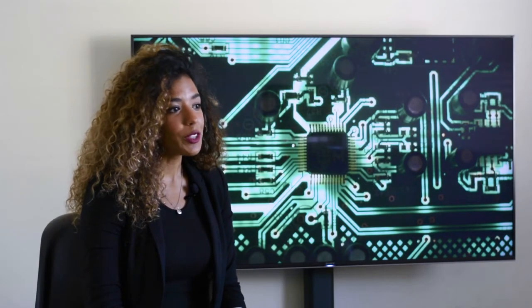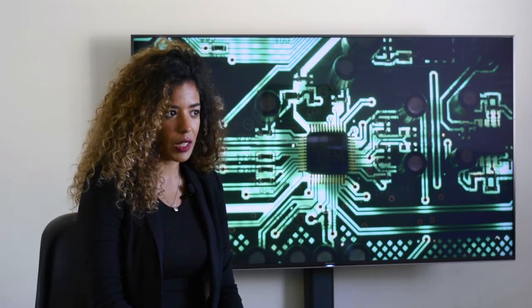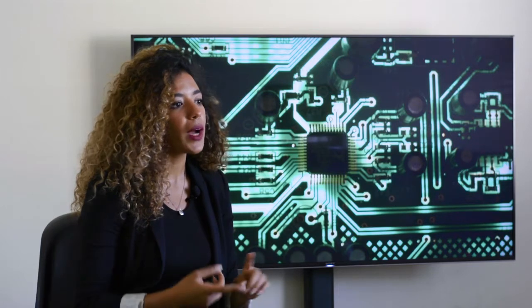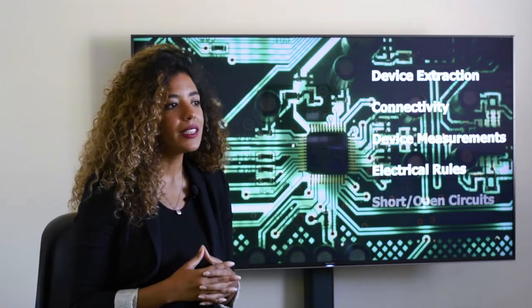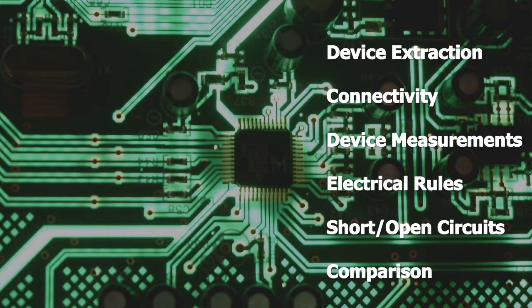LVS, or layout versus schematic, is an essential part of the circuit verification flow. The operations performed include extracting devices from the layout, determining device and net connectivity, performing checks like electrical pass check, floating node checking, short and open net detection, device measurements, and finally comparing layout to the schematic to ensure that the logical circuit representation matches the physical implementation.